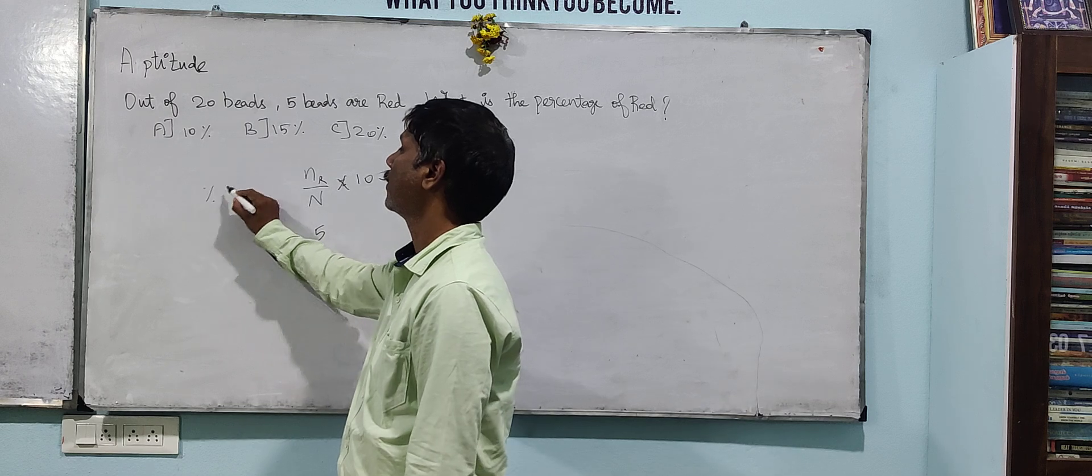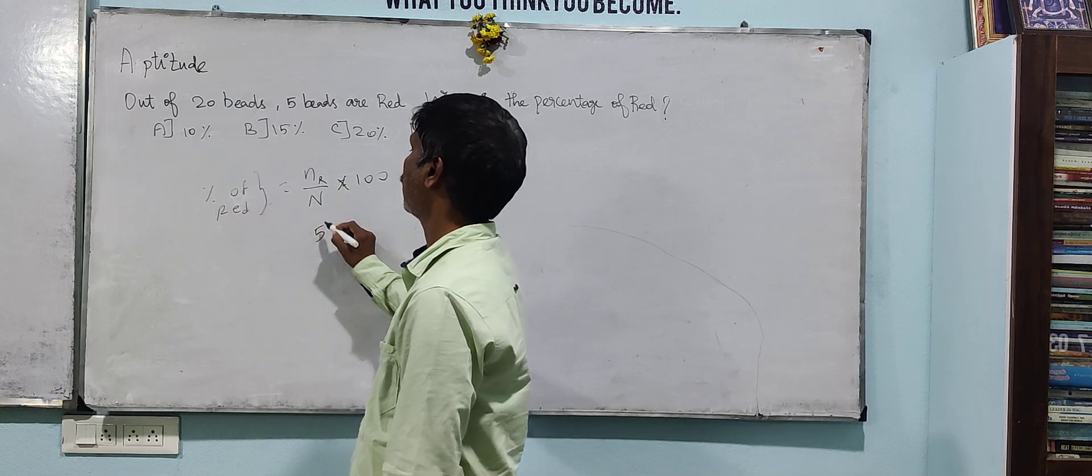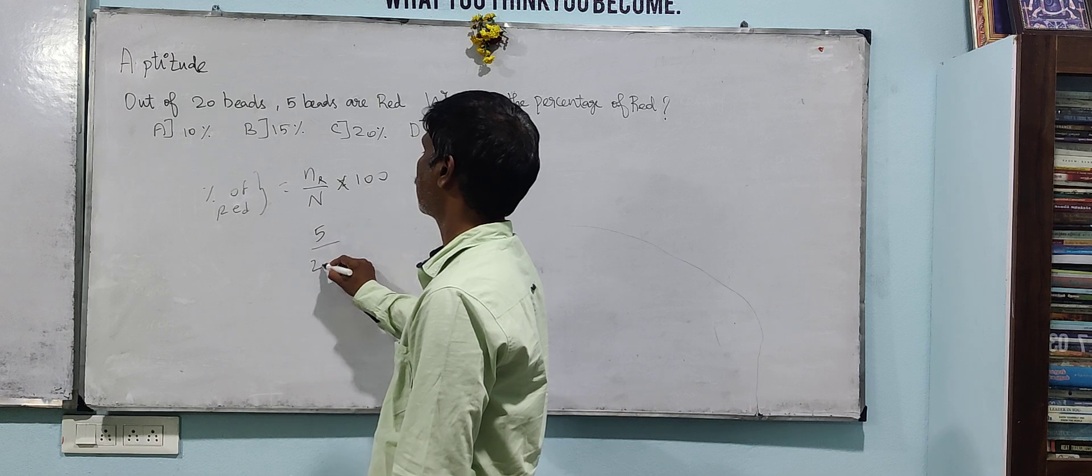Percentage of red. So number of red is 5, 20 weeks total.